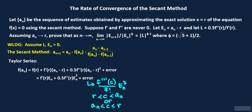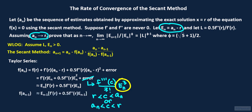Under the assumption that the sequence a sub n converges to x equals r, e sub n also tends to 0, so that if n is large enough, e sub n should be quite small. And so the error term, which behaves like the cube of e sub n, will be smaller than the other terms of lower order in e sub n, so that we obtain this approximate equation for f of a sub n by disregarding the smaller error term. Applying the same idea to f of a sub n minus 1, we get a similar approximate equation for f of a sub n minus 1, this time in terms of e sub n minus 1.